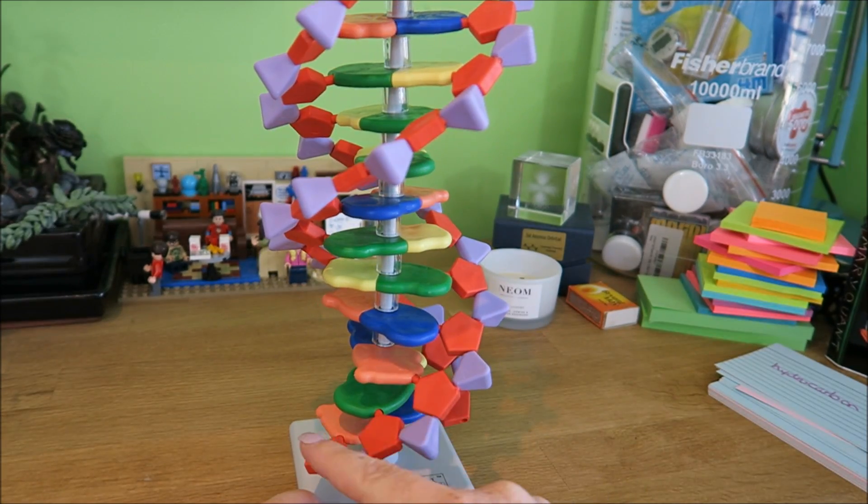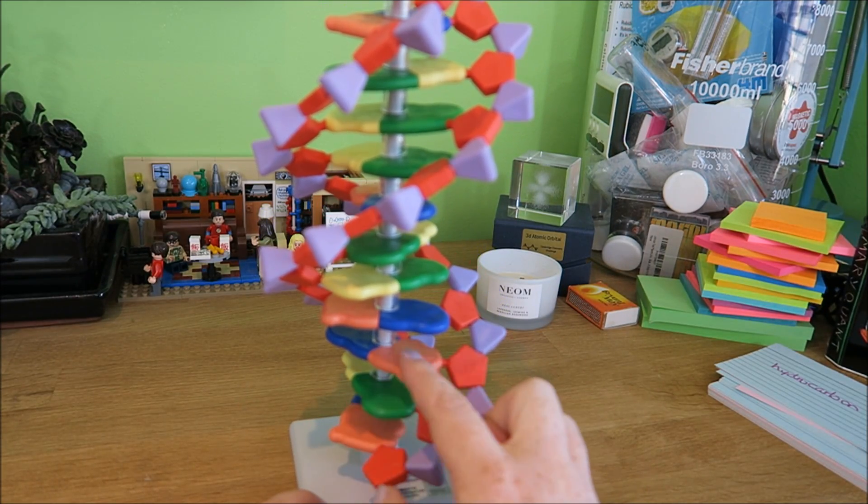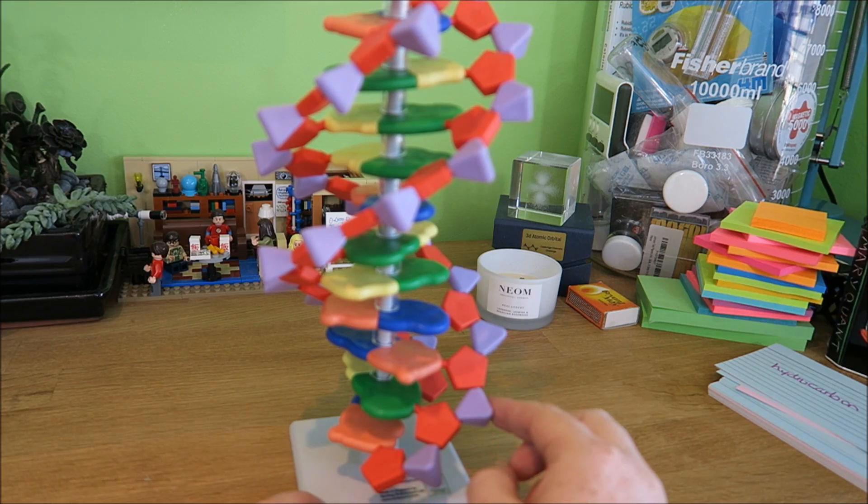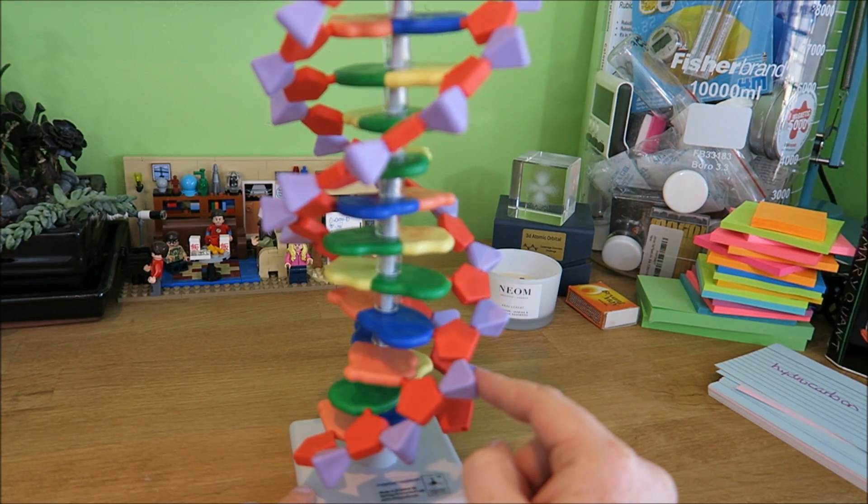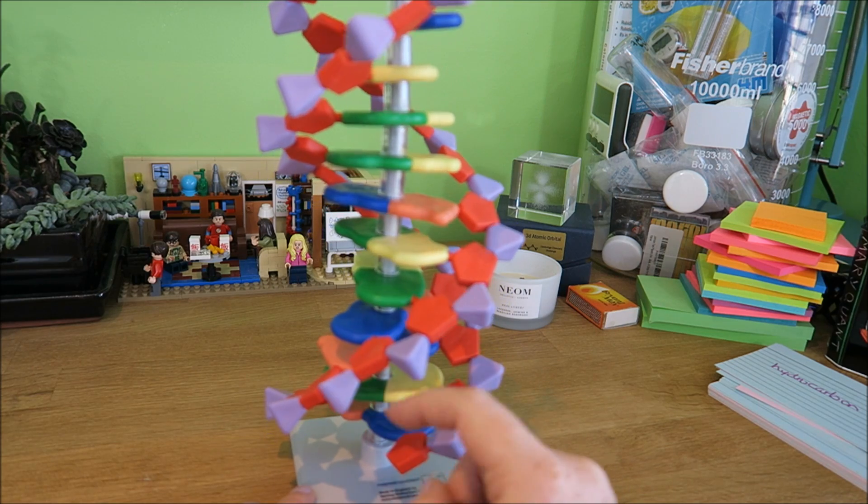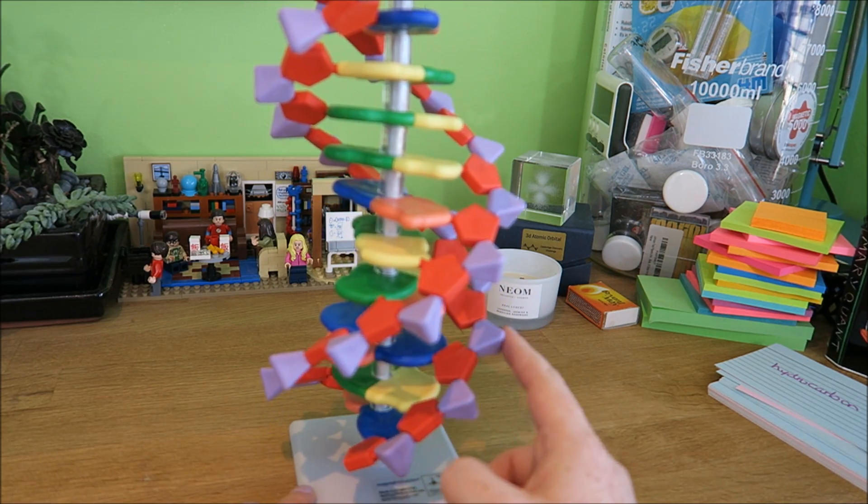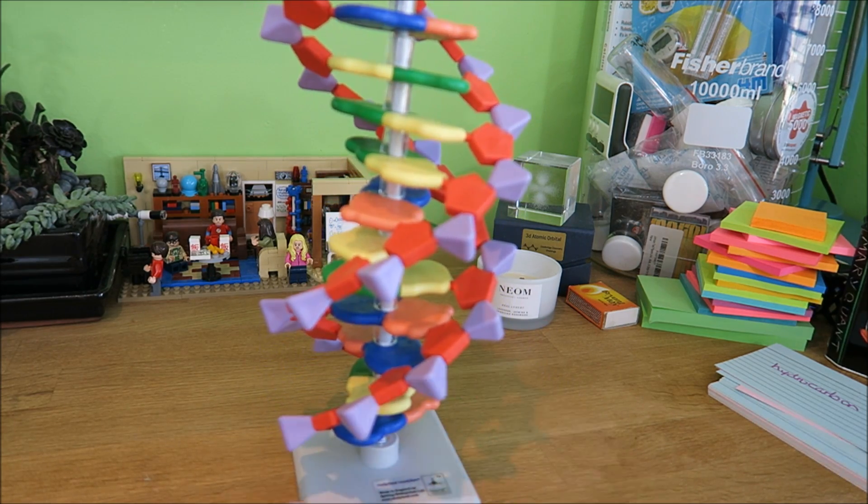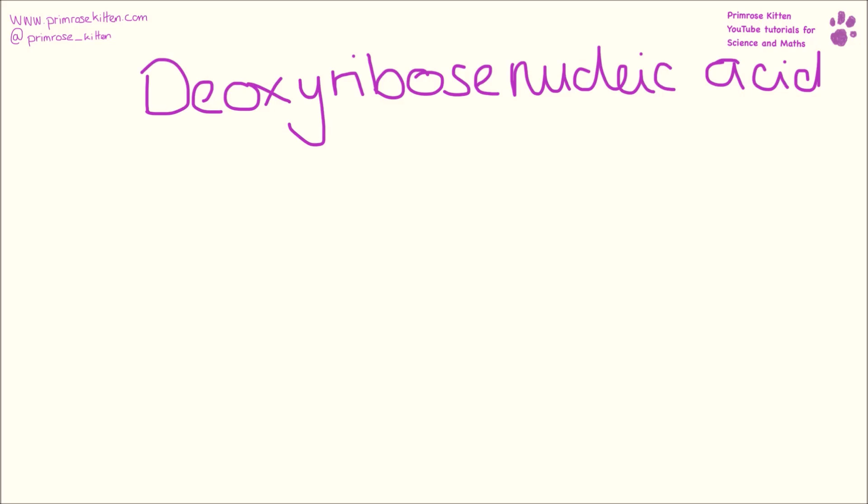Now the order that these bases are in will determine what amino acids are produced, and then that will go on to determine what proteins are produced. DNA stands for deoxyribose nucleic acid and it has four bases in it: G and C which go together, and A and T which go together.